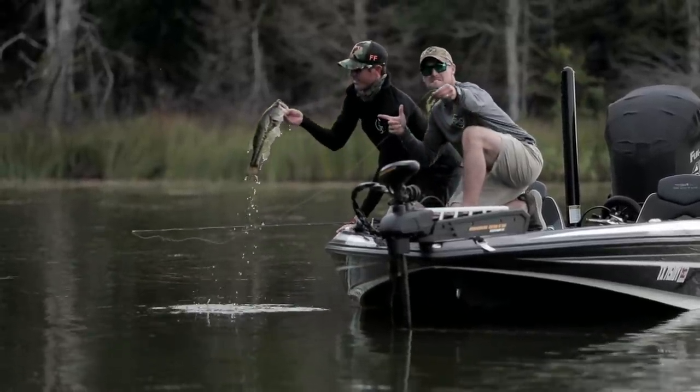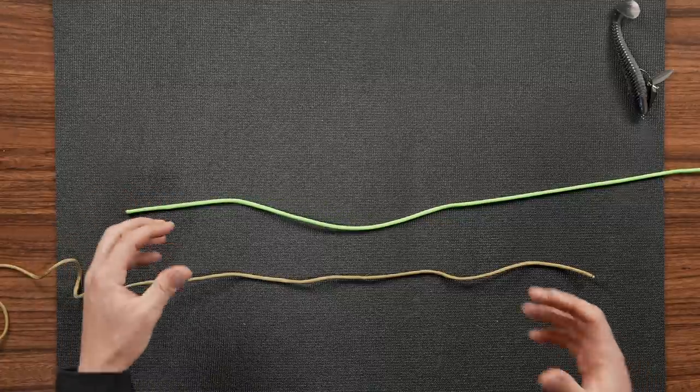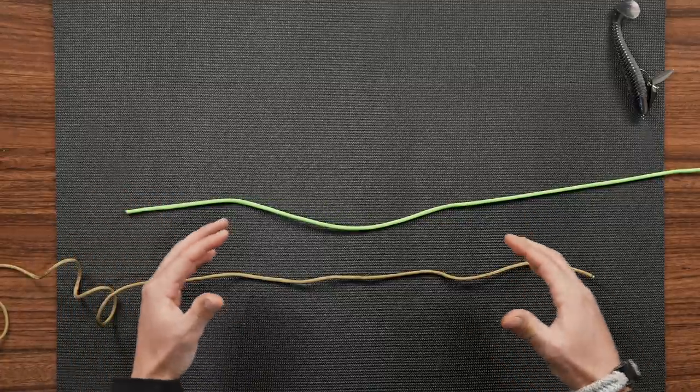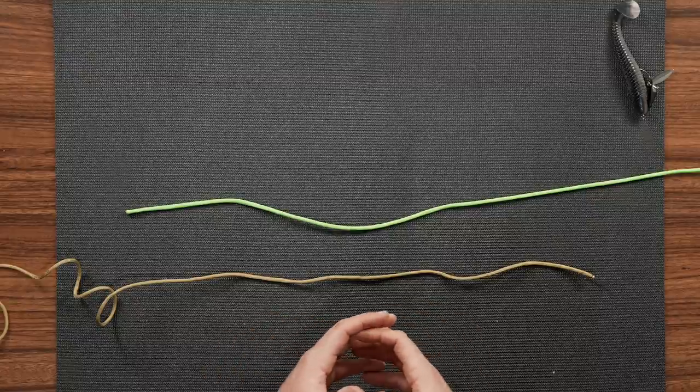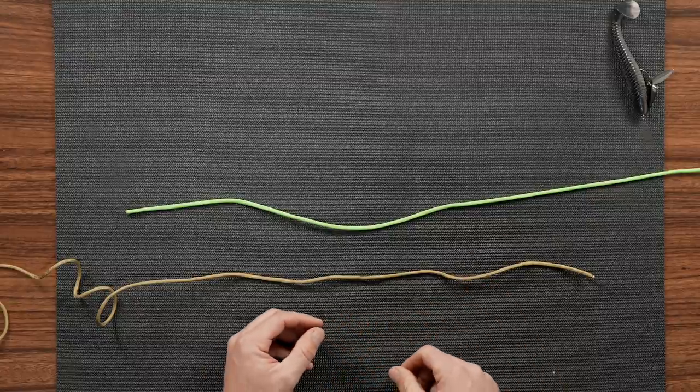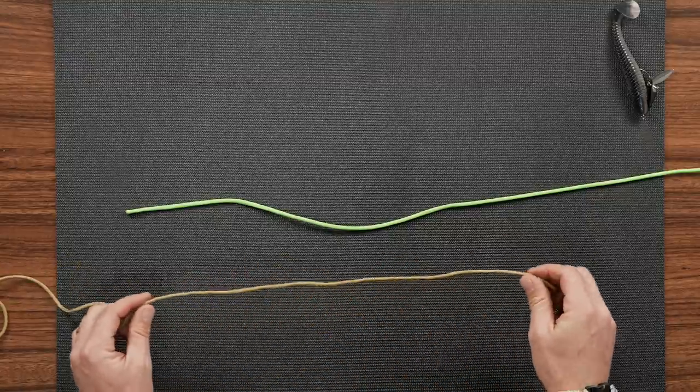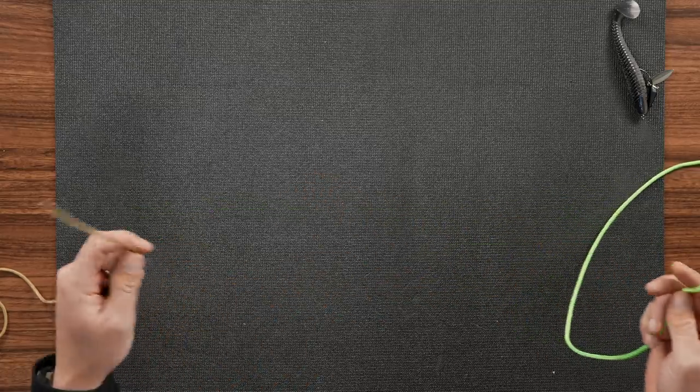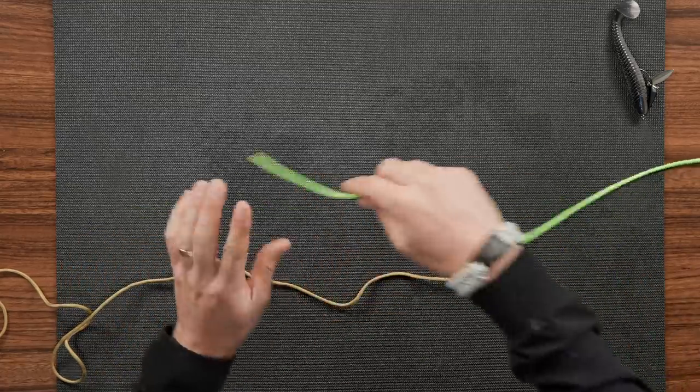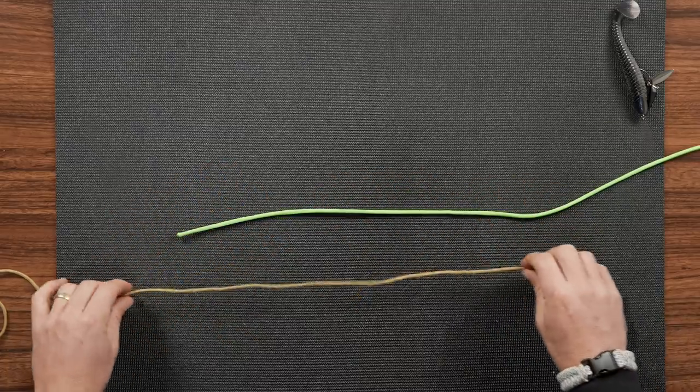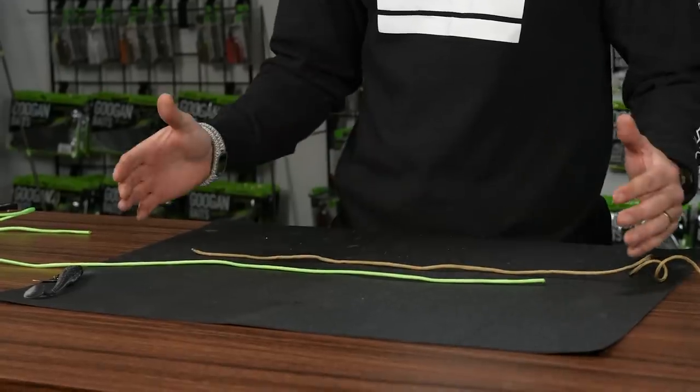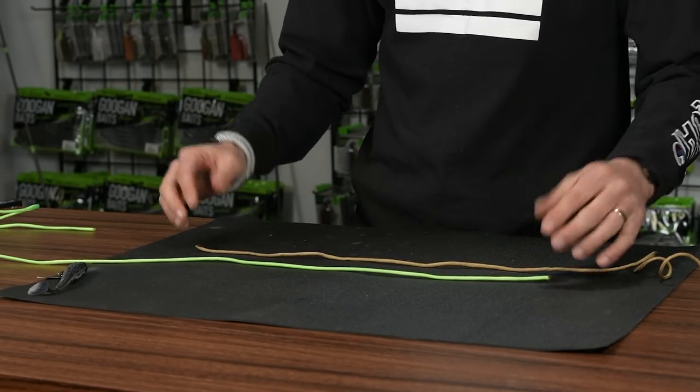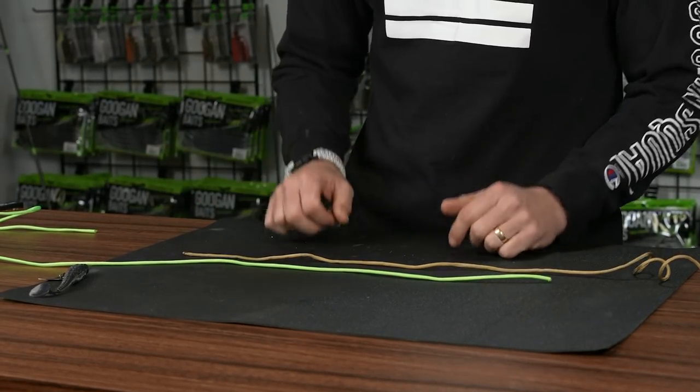So the double uni knot is an overlapping of two different lines. We've got some paracord laid out here and we're going to show you how to do this step by step. So the first thing you're going to do is overlap your lines. Say you're doing a braid-fluoro connection, you just want to cross them like this. Give yourself plenty of room, about a foot on each side to work with.